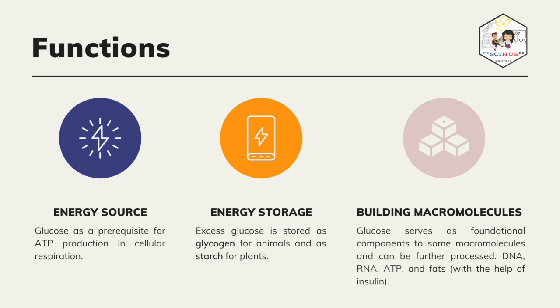Energy storage: as discussed earlier, excess glucose in plants and animals is directed toward different parts of the organism. For plants, they are stored in seeds or roots, while for animals they are stored in the liver and muscles. These are stored for future use in the form of the storage polysaccharides starch and glycogen. Building macromolecules: some glucose is converted and used by the body to create ribose and deoxyribose, which are essential building blocks of our DNA, RNA, and ATP. Additionally, excess glucose and glycogen stored in the liver, when processed by insulin, can lead to lipid synthesis.